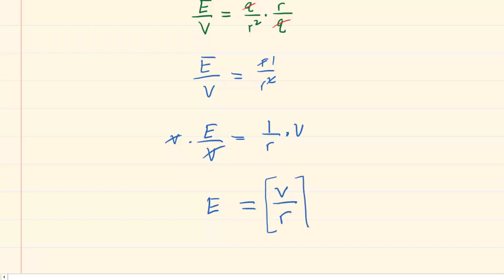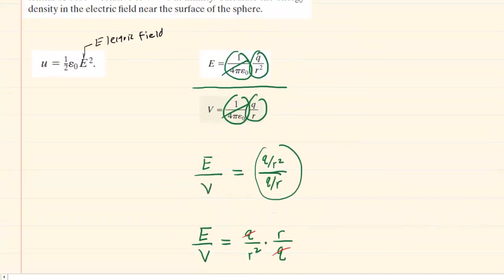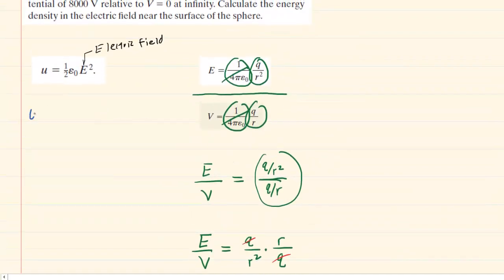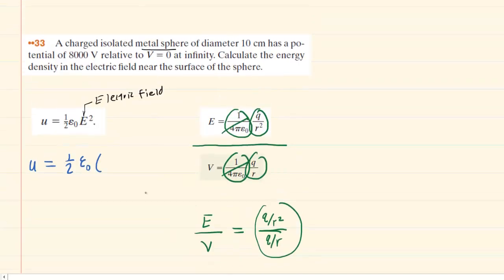This expression for the electric field, V over r, is what we need to substitute into our energy density equation. So we have the energy density equals one half times a constant multiplied by the electric field, which we just derived was V divided by r. Don't forget that the electric field is squared, so we will still square this value. Now we're ready to plug in the known values.